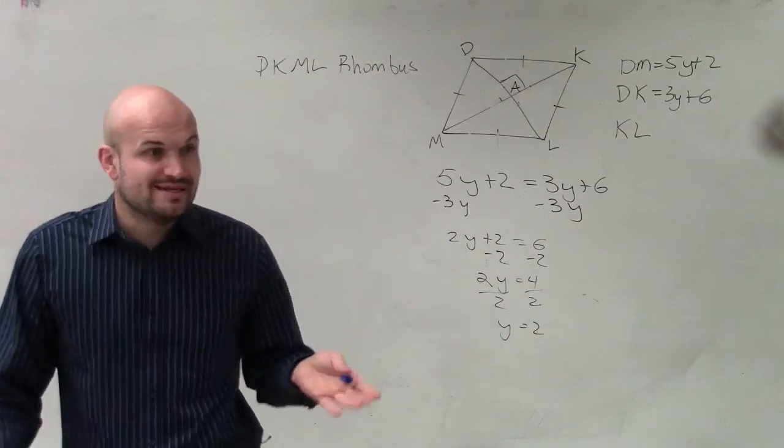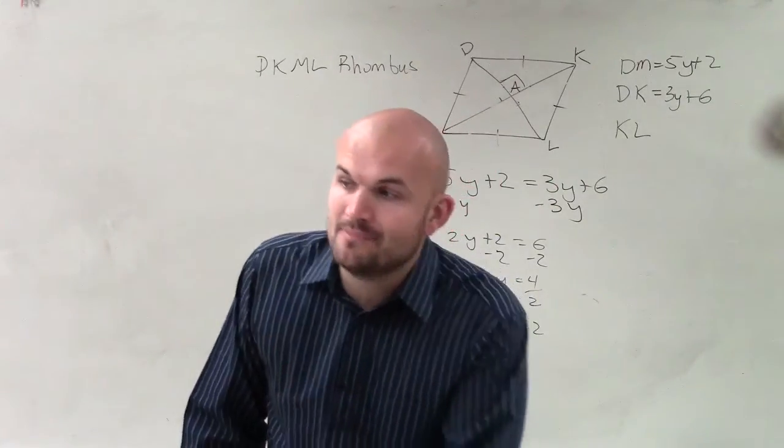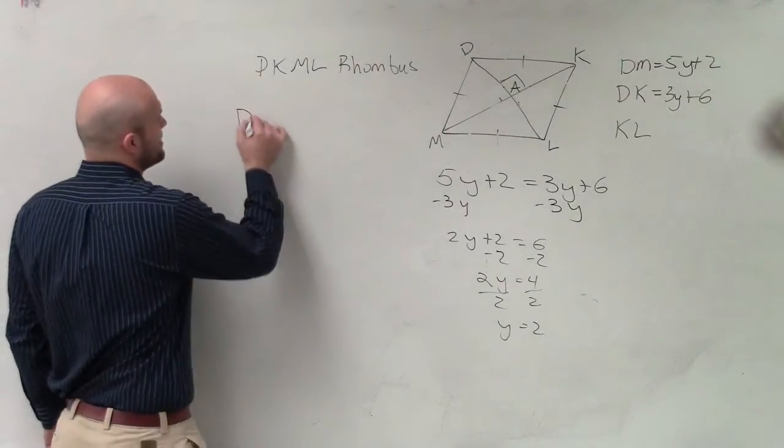Now, again, I don't need to find, actually, there is no expression for KL. But I know that a rhombus has all congruent sides, so I just need to find the measure of one side. So I'll find the measure of DM.